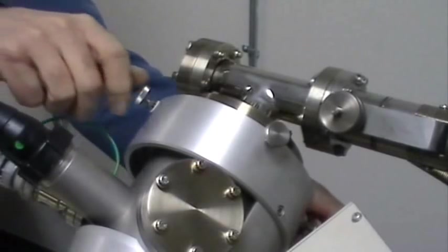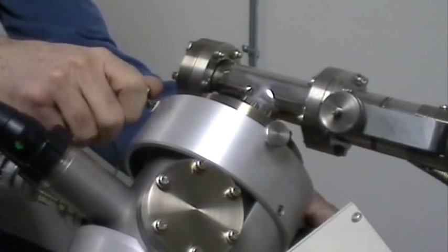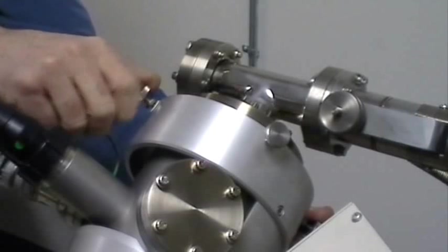This is what the thumb screws look like on the ion source. The trick to remember here is that as you move the source, the beam will move in the opposite direction of the thumb screws.